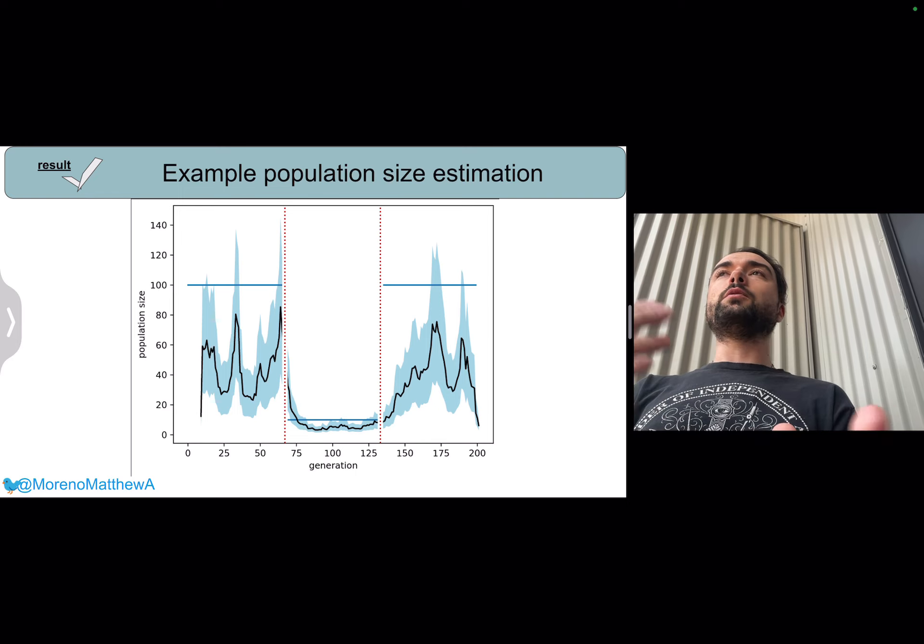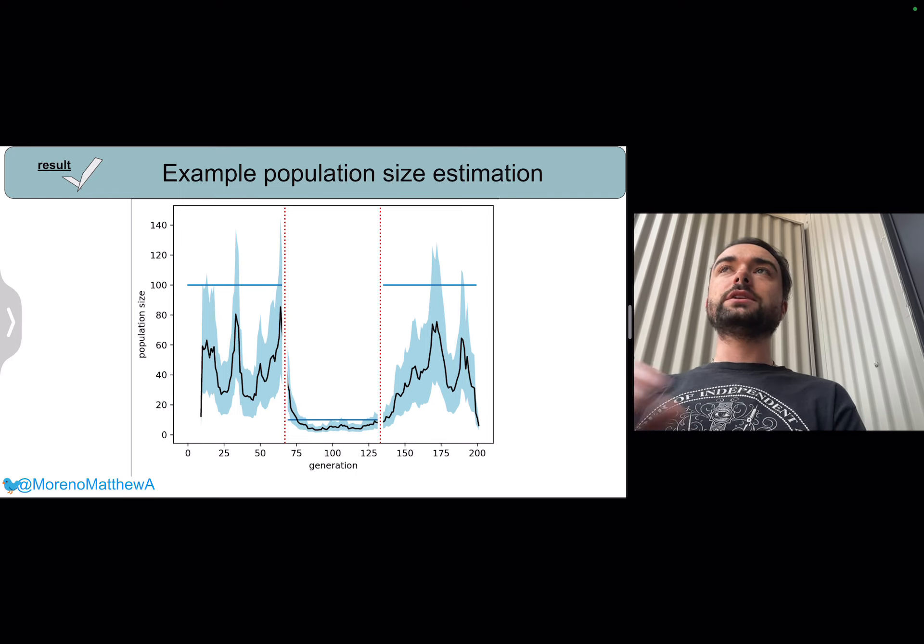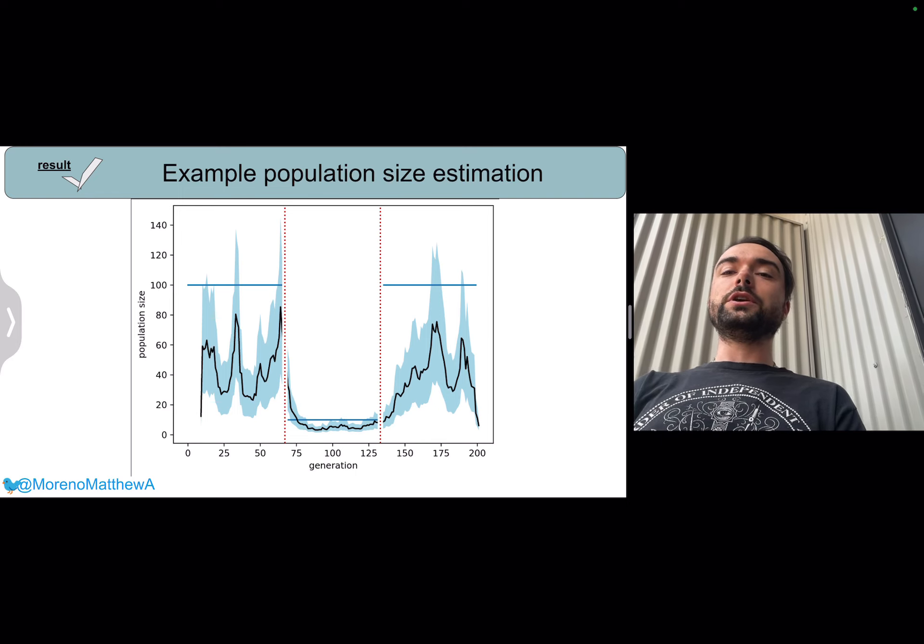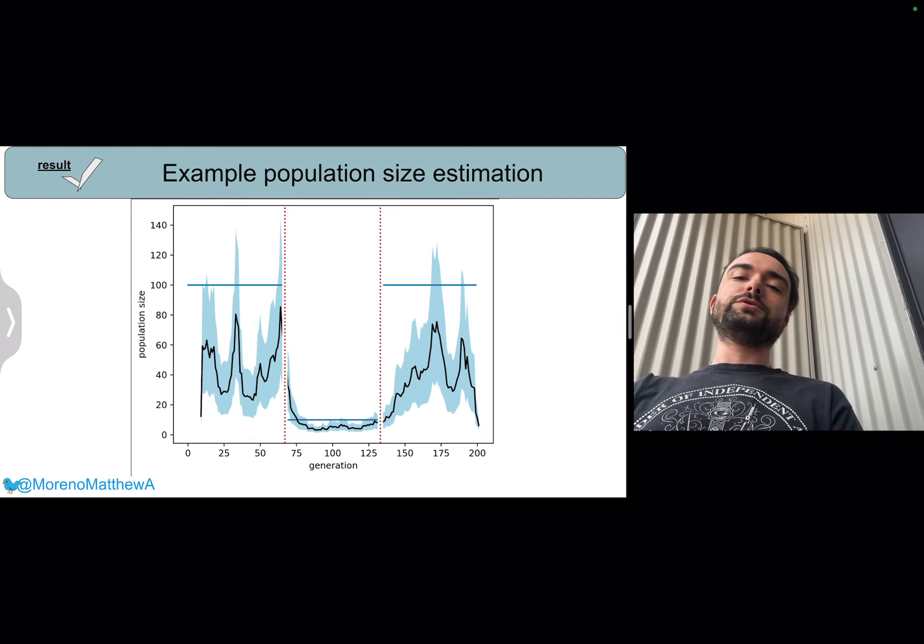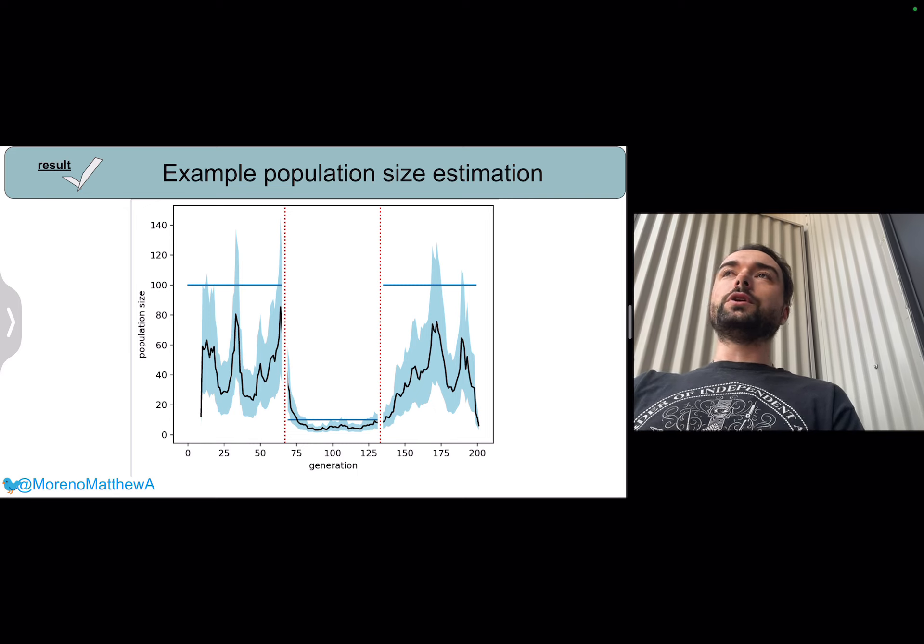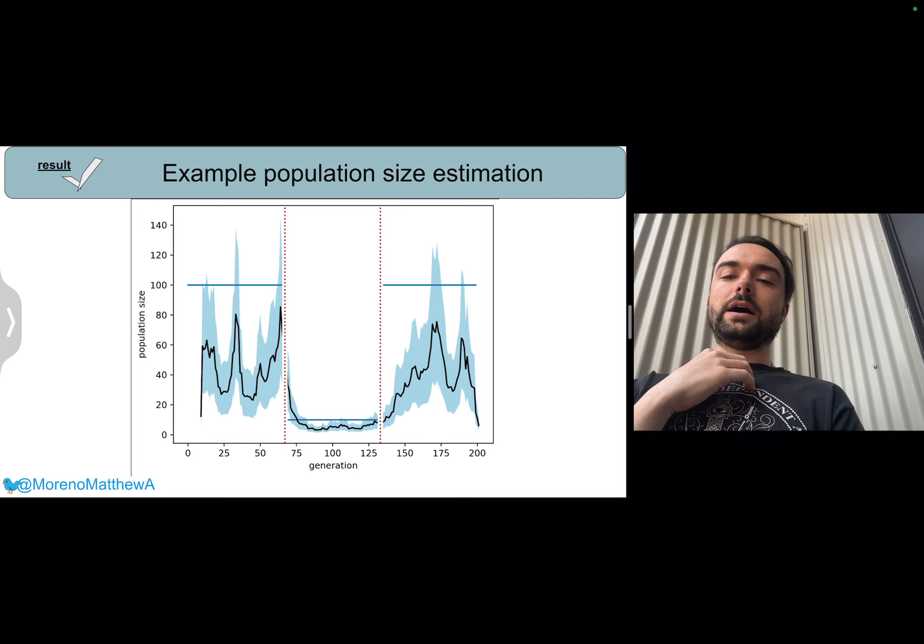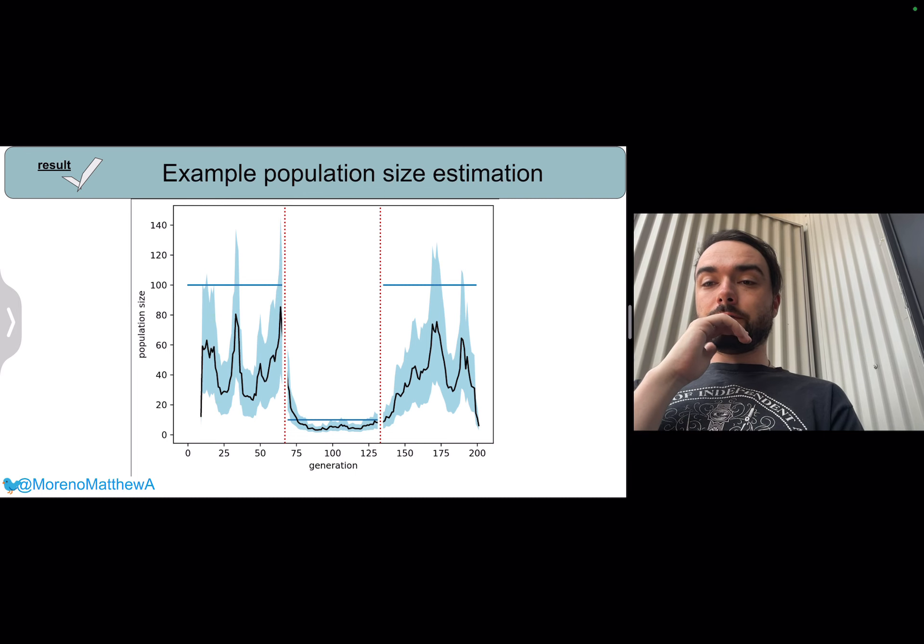This can give us, within orders of magnitude, an estimate of the population size. So here we can see an estimate where we were able to detect a bottleneck event where the population was dropped from 100 down to 10 and then reconstituted back up to 100 in the last part of the run here.